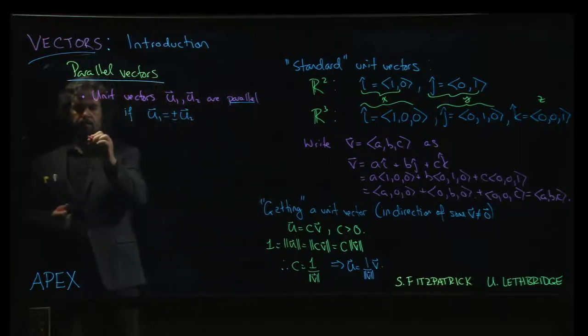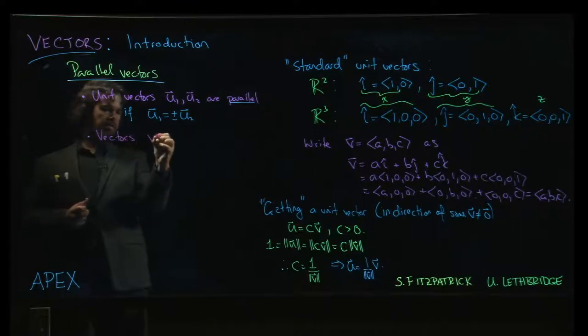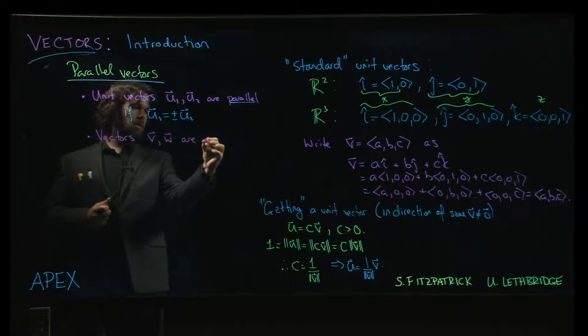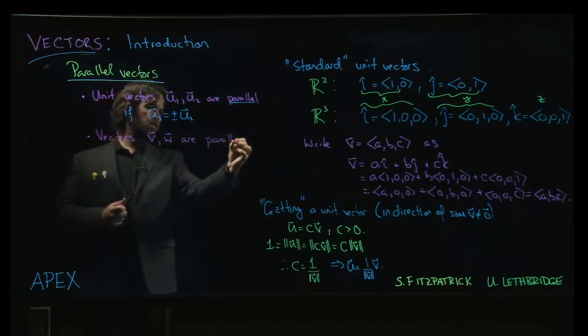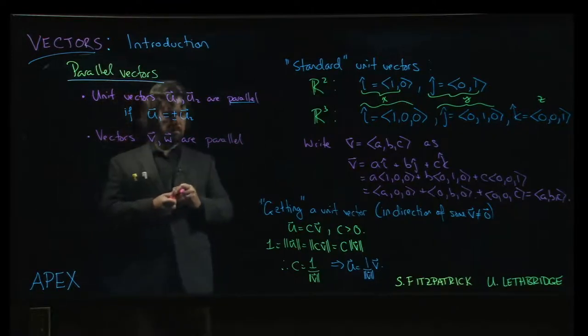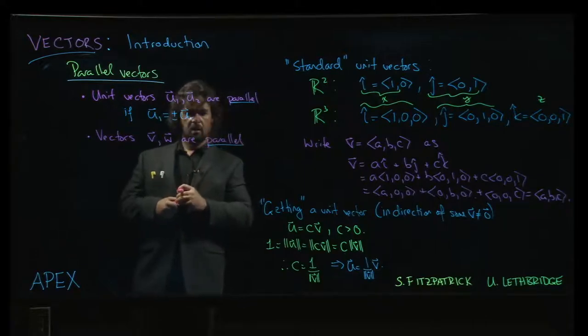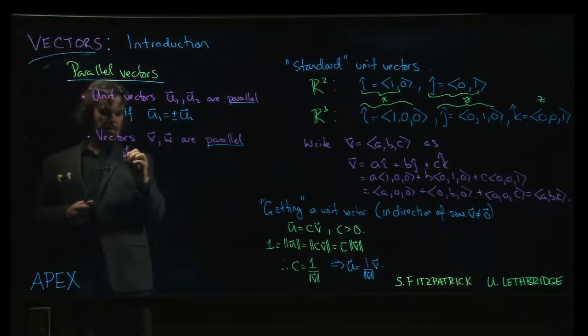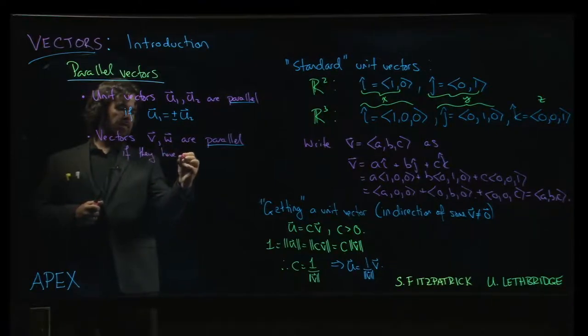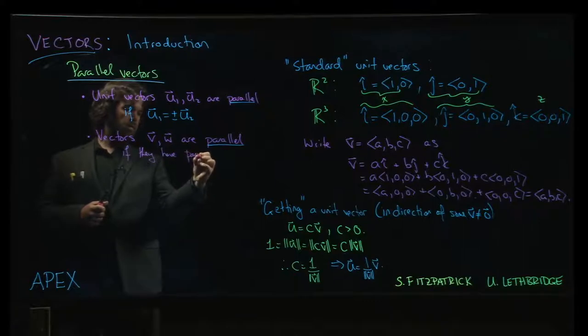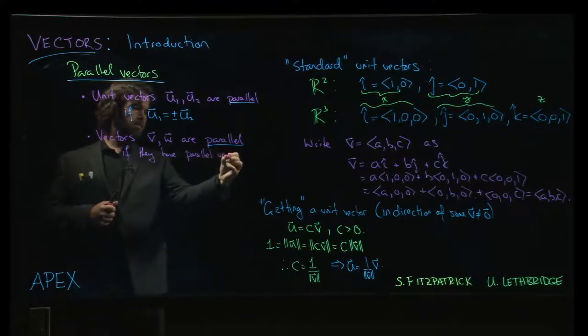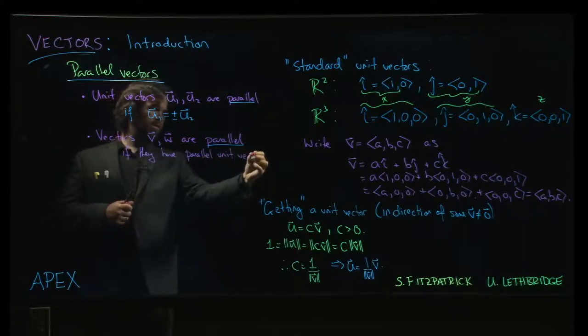And then vectors, say v and w, are parallel. So if I have two vectors which are not necessarily unit vectors, then they will be parallel if they have parallel unit vectors.